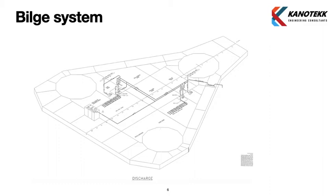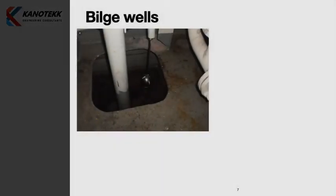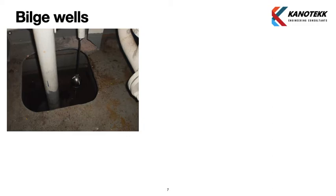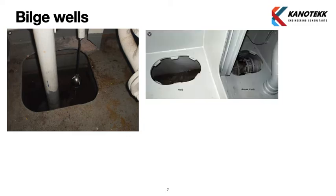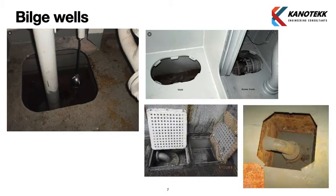The drawing details the bilge system discharge part. As discussed, the bilge pumps discharge to the bilge holding tank. Photos of a bilge well are shown here — the pipe visible in the photo is the suction pipe. Inside the bilge well, at the end of the suction line, there is a strainer which is also called a crossbox.